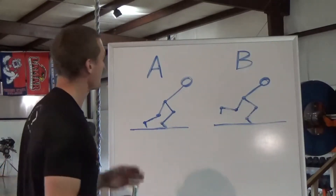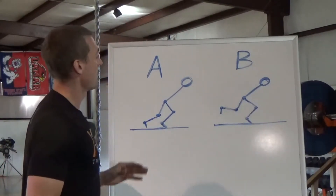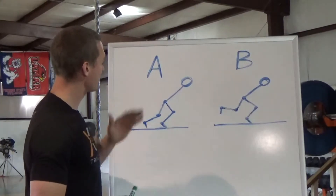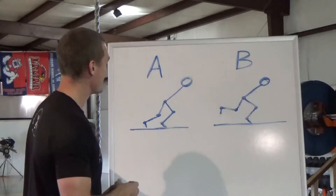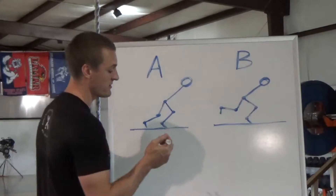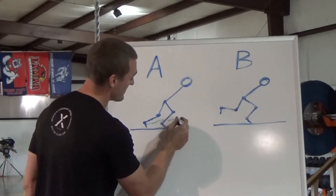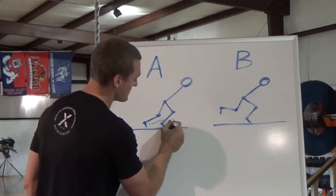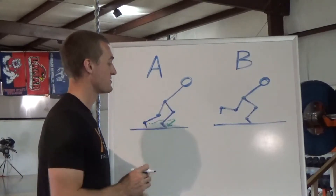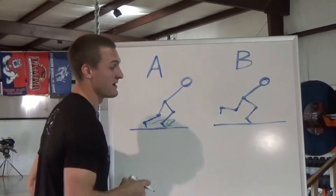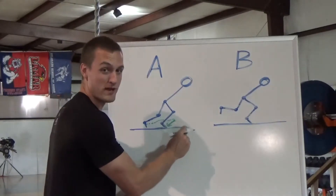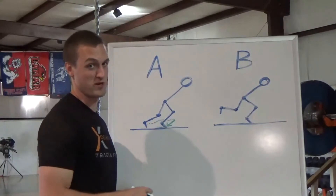Let's say we have two hypothetical athletes here, athlete A and athlete B. These models are showing the moment when the front foot hits the ground. Athlete A is a skilled accelerator — athlete A is going to hit triple extension, pushing off the ground.